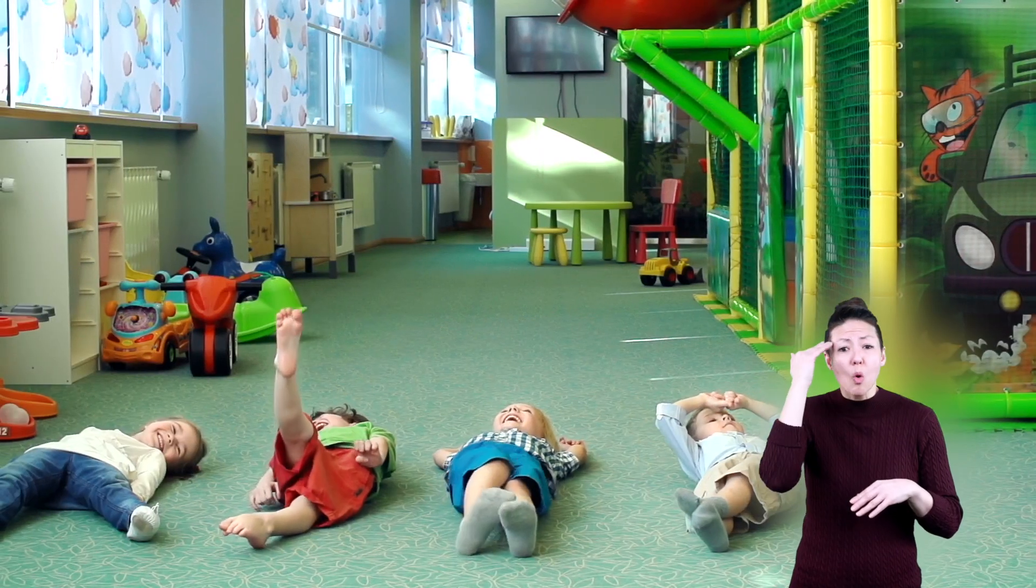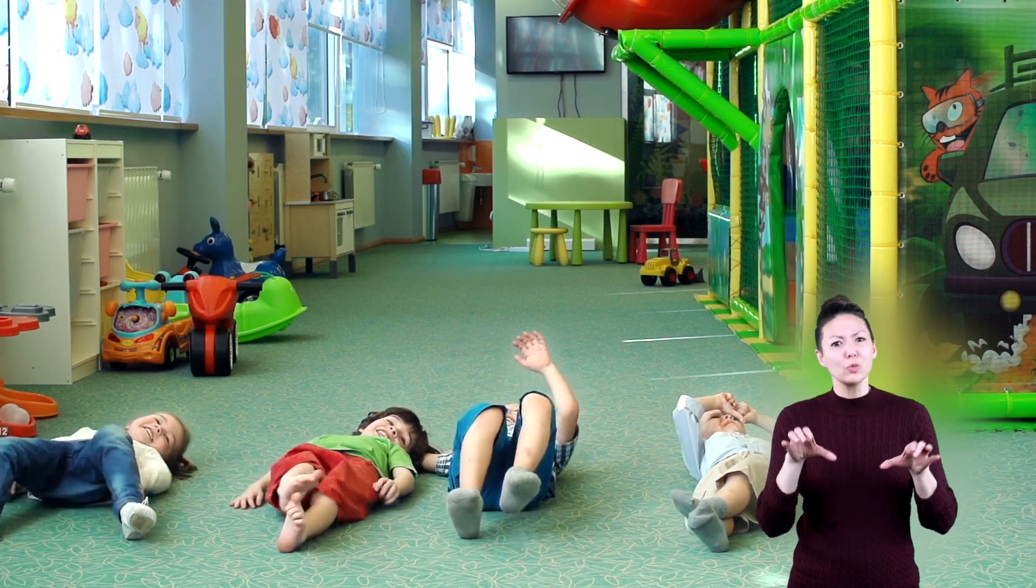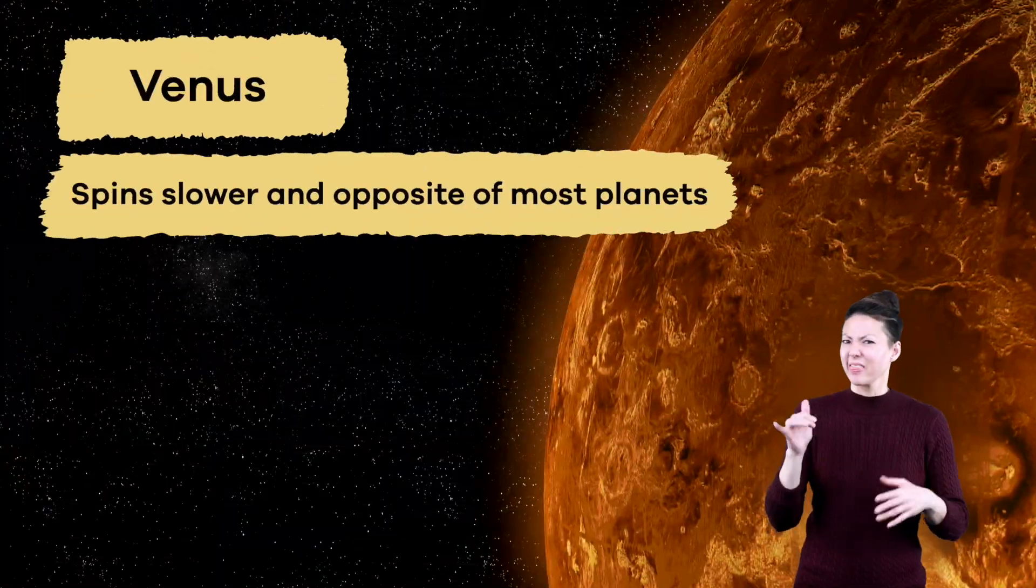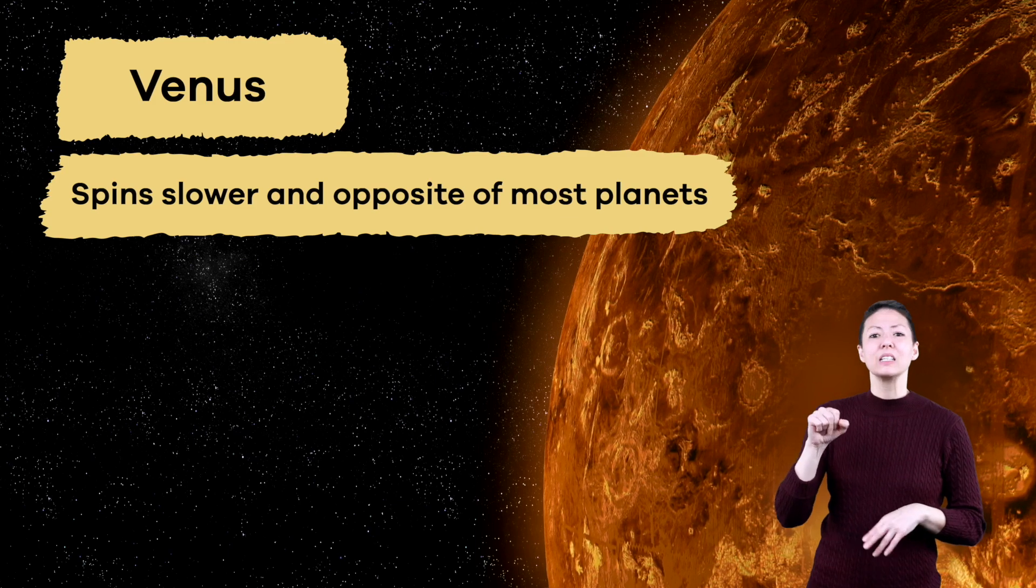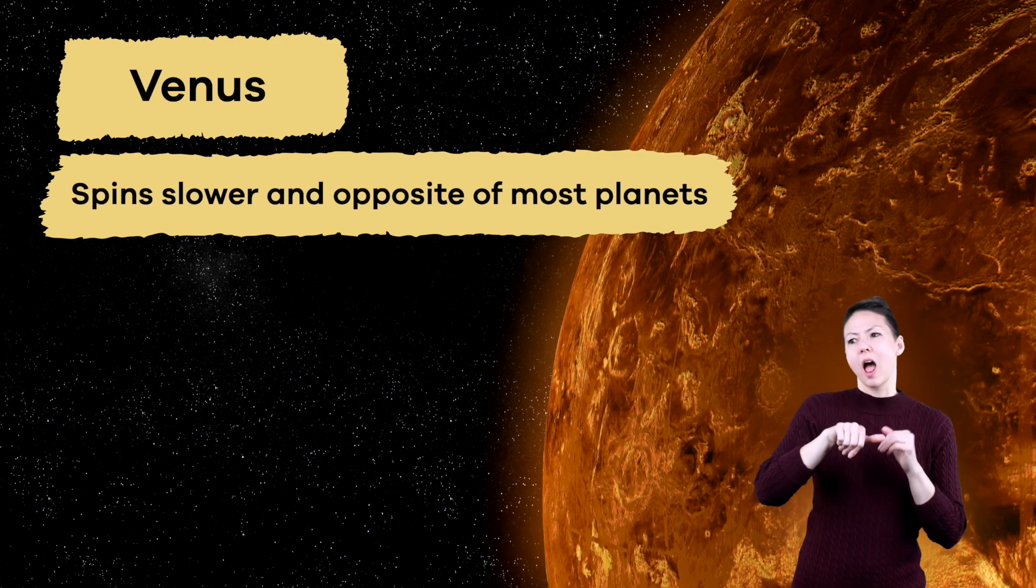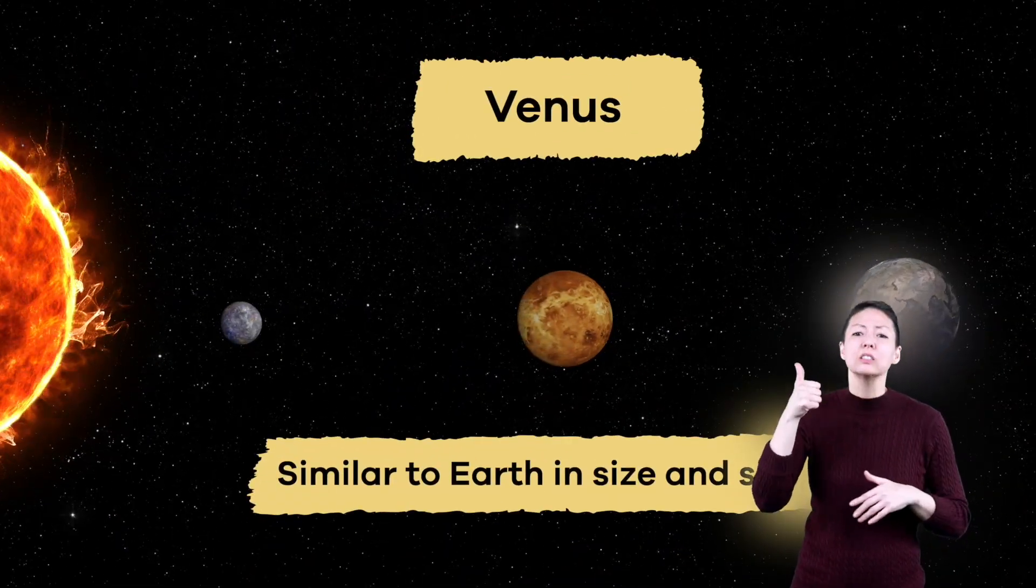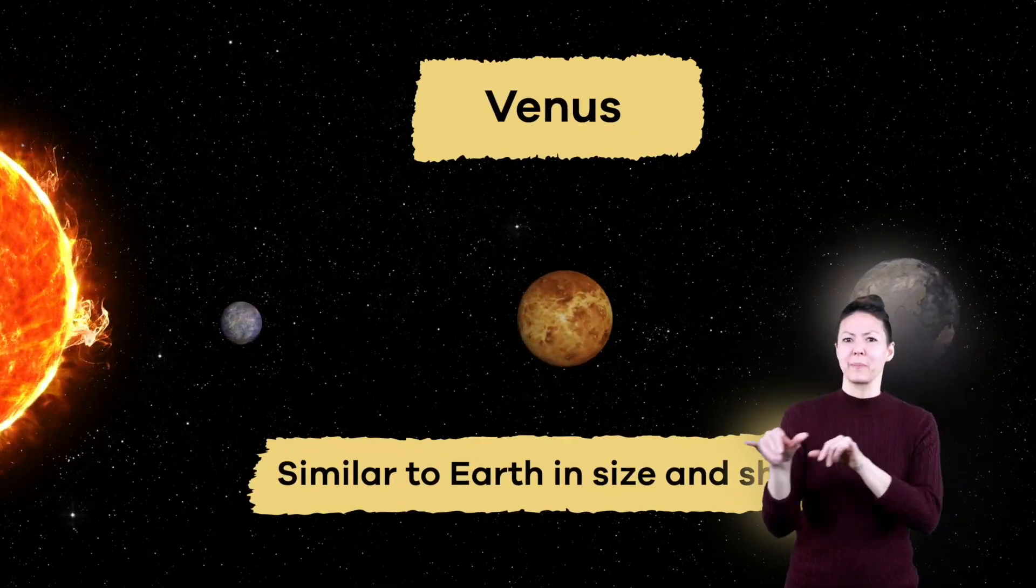But that's not the only thing that makes Venus different from the other planets. Do you know any kids at your school that have to do the opposite of what every other kid is doing? Well, that's Venus. Venus spins slowly and in the opposite direction of most planets. Even though Venus is a lot hotter than Earth, it is similar to Earth in size and shape.